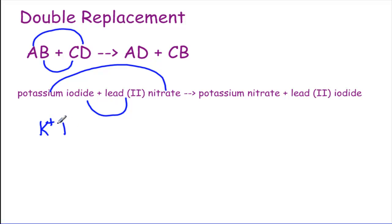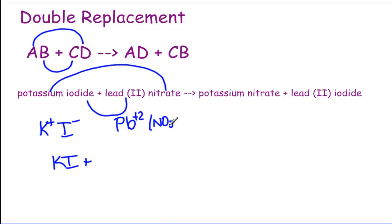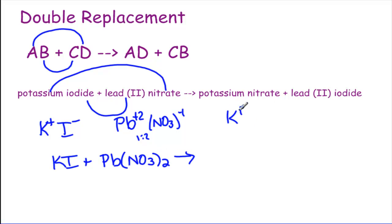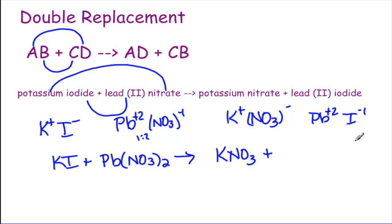Potassium is a plus 1. Iodine is a minus 1, so we get KI. Lead — remember that 2 tells us it's plus 2. Nitrate is minus 1, so we flip those and get 1 to 2, giving Pb(NO₃)₂. Potassium is plus 1, nitrate is minus 1, so we get KNO₃ for potassium nitrate. And then our lead plus 2 and iodine minus 1 — flip those — we get PbI₂. So this is our double replacement reaction.